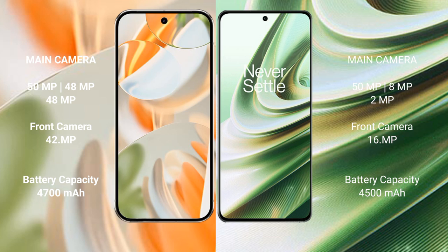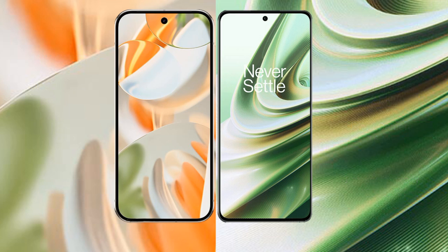The Google Pixel 9 Pro has a 4,700mAh battery with 27W fast charging support. The OnePlus 10R has a 4,500mAh battery with 120W fast charging support.